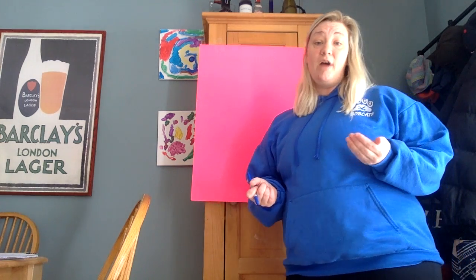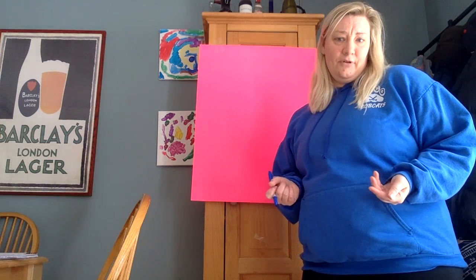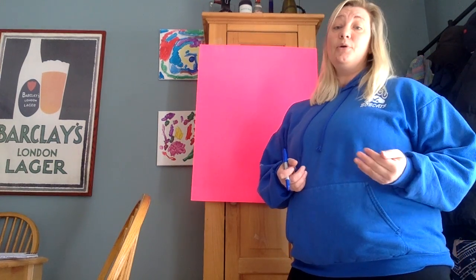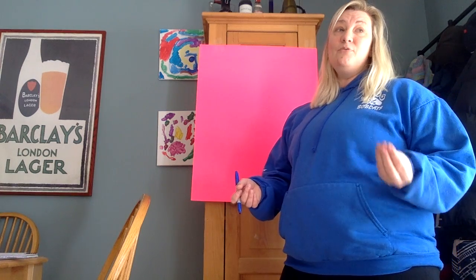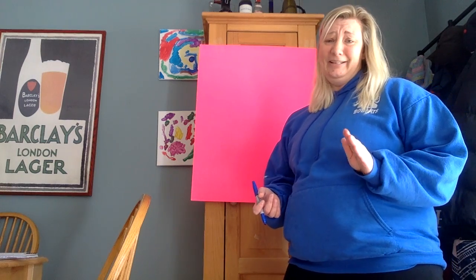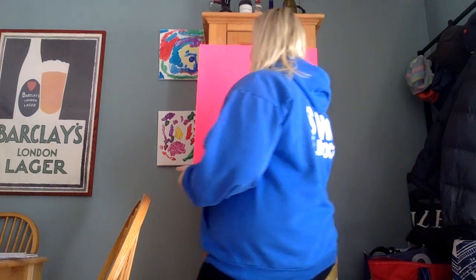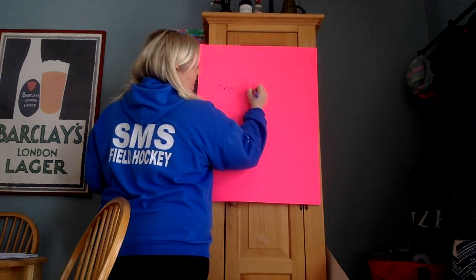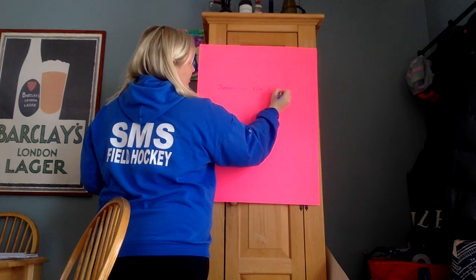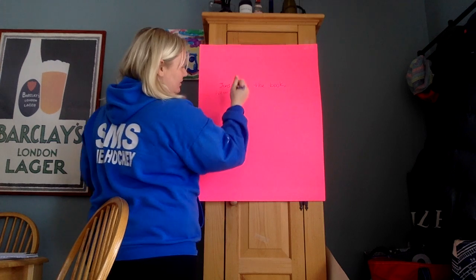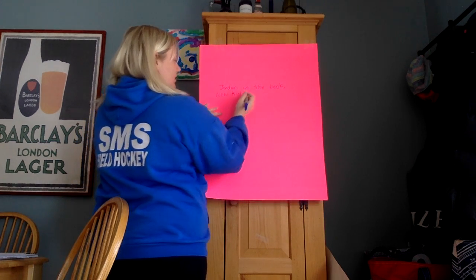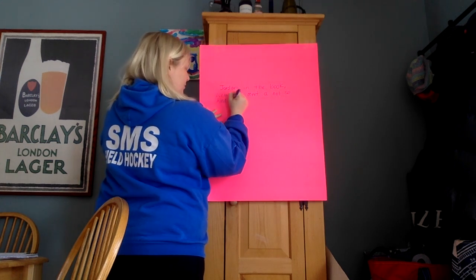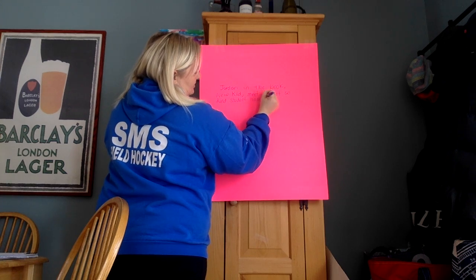Today I am going to show you what a reaction versus a summary would look like. We're going to use our book New Kid again, and I'm really going to try to step away every few seconds so that you can see what it should look like. The reaction I chose to write about today is an inference I made about one of the characters. We have Jordan, our main character; Liam, who is the kid showing him around the school; and Andy, who says insensitive things all the time. In my paragraph, I'm going to start: 'Jordan, in the book New Kid' — and I want to underline my book title — 'meets a not-so-kind student named Andy.'